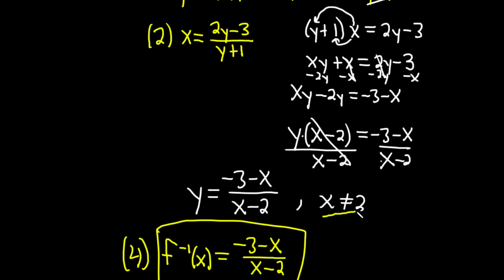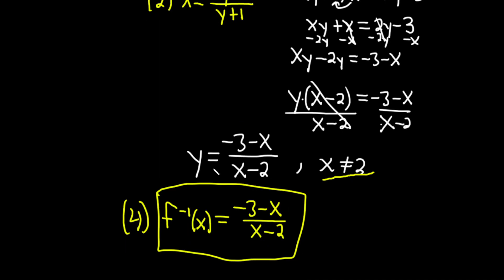And that gave us y equals negative 3 minus x over x minus 2. I made a point here. x is not equal to 2, right? Because then you would get division by 0. So something to keep in mind. And then the very last step is to write it using the proper notation.